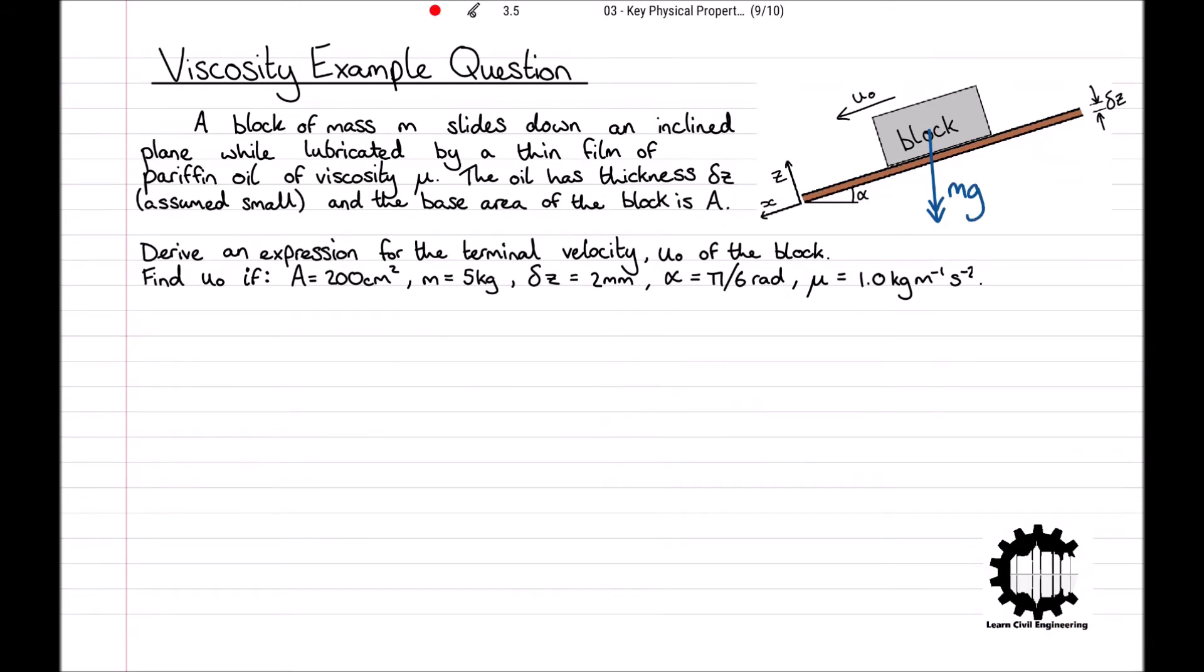This results in a force acting parallel to the slope in the downwards direction, and using trigonometry, we get that the force is equal to mg times by sin alpha, where alpha is the angle of the slope in radians. And then secondly, we have a reactive force of F parallel to the slope in the opposite direction.